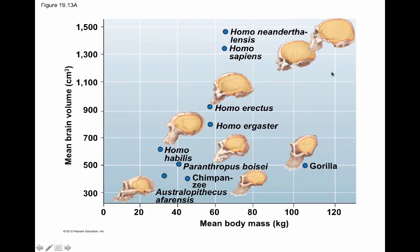Looking at brain size compared to body size, Homo sapiens is high on that scale. The Neanderthals actually had a bigger brain compared to their body size, but we don't think their groups were as good at tool use. They used tools for sure, but Homo sapiens seemed to be better at changing with the environment more rapidly, technology-wise, than the Neanderthals were.